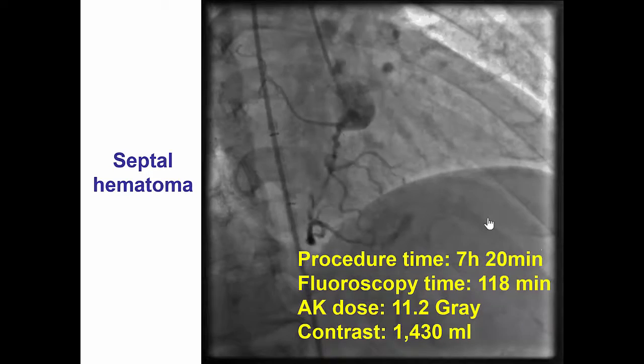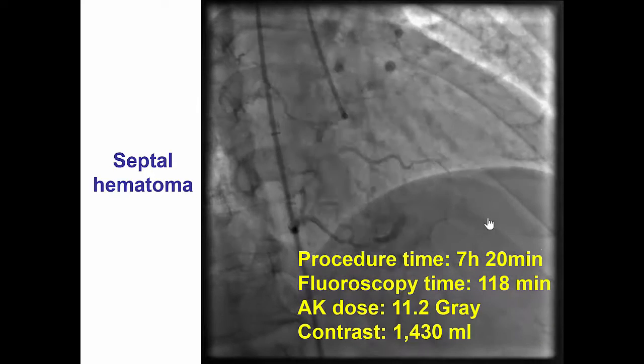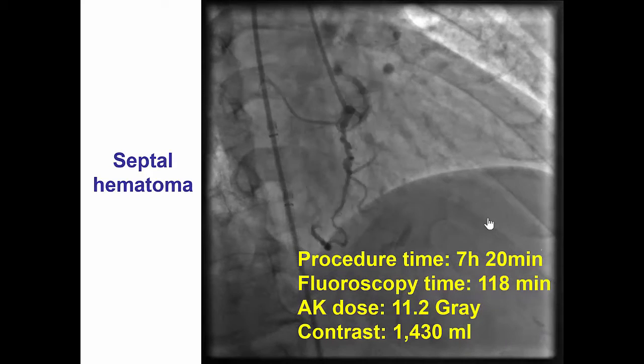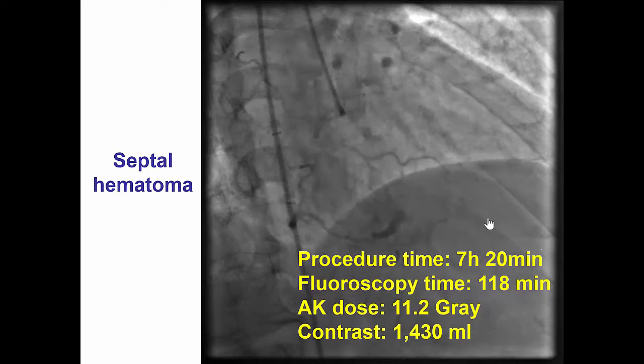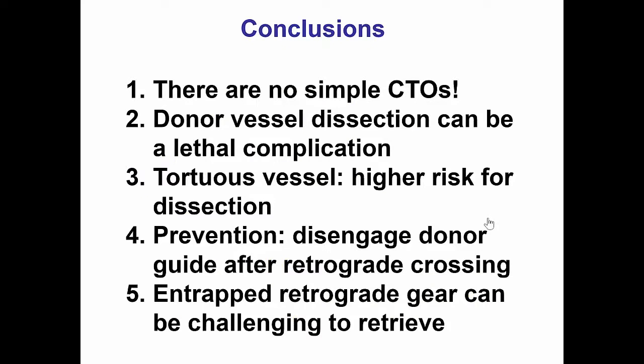This was a very long case — two hours of fluoroscopy time, 11.2 gray of radiation, and a record contrast volume of 1,400 mLs. This case has several important lessons. The first is that there is no such thing as a simple CTO. This lesion had a JCTO and Progress CTO score of zero, so one would expect it to be a quick slam dunk. However, it was a many-hour case that almost resulted in hemodynamic compromise or even death.